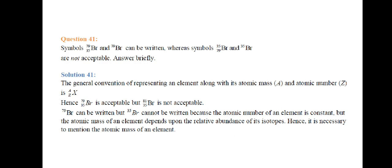⁷⁹Br is written with atomic mass only on top, which is acceptable. But Br³⁵ cannot be written because placing the atomic number alone is not acceptable — the atomic number of an element is always constant. However, atomic mass depends on the isotope. Hence it is necessary to mention the atomic mass of the element. Atomic mass must be mentioned, but atomic number alone cannot be written since it is always constant whereas atomic mass varies between isotopes.